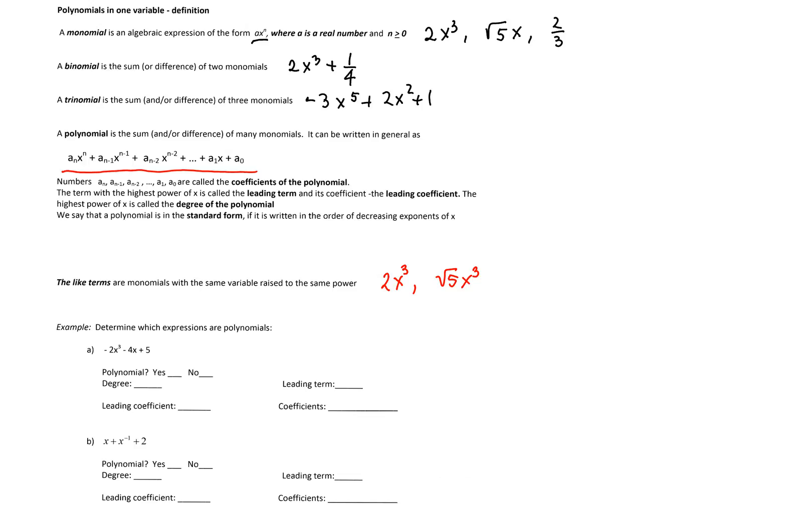Let's look at an example where we want to determine whether the expression is a polynomial. The first one is negative 2x cubed minus 4x plus 5. This expression has three terms: negative 2x cubed, negative 4x, and positive 5. All of them are monomials and we are adding those monomials, therefore this is a polynomial.